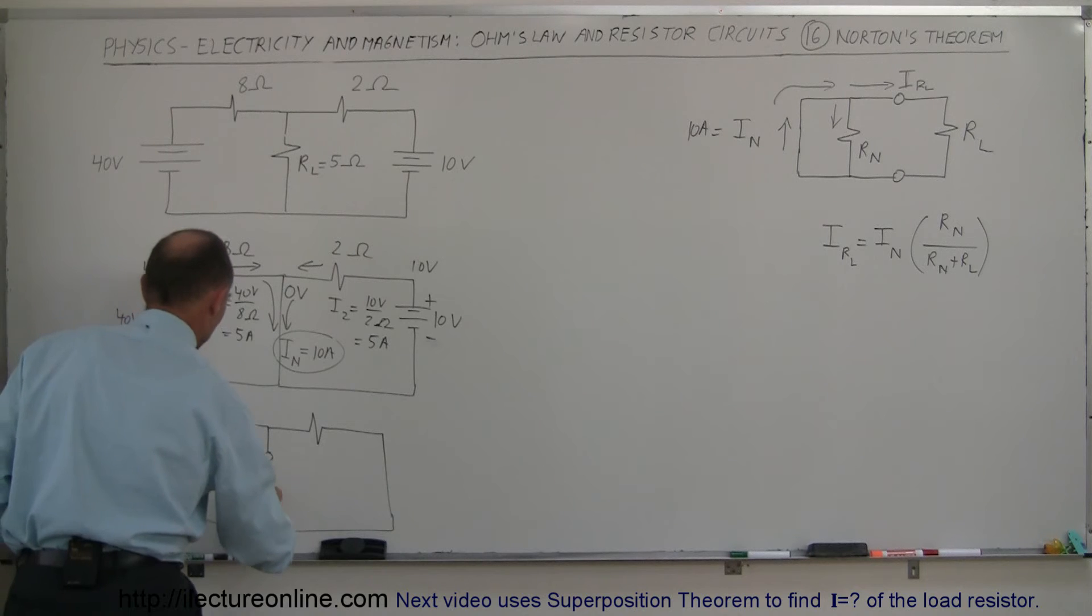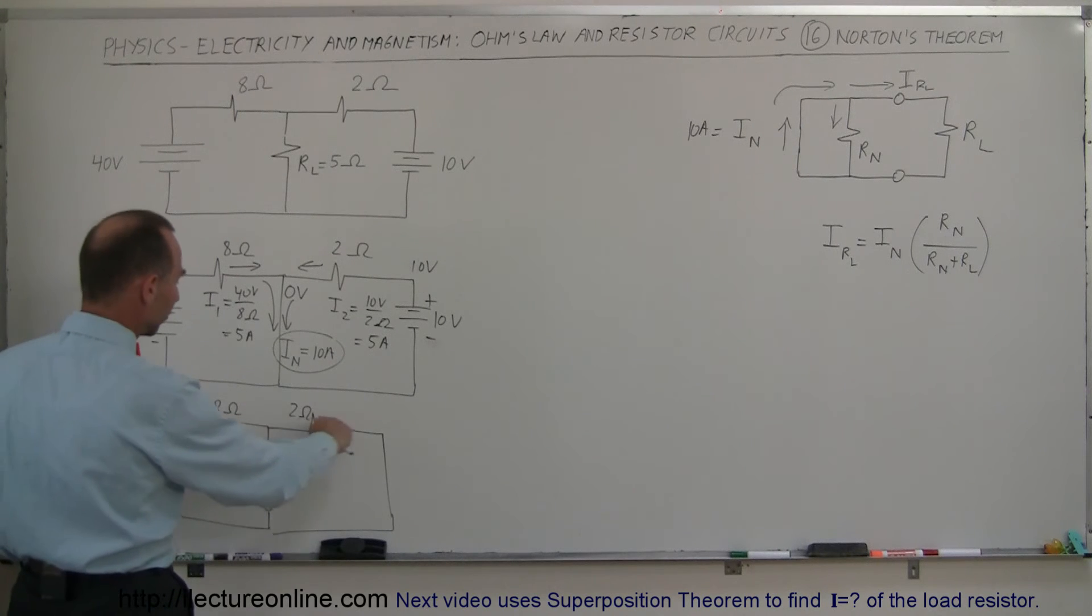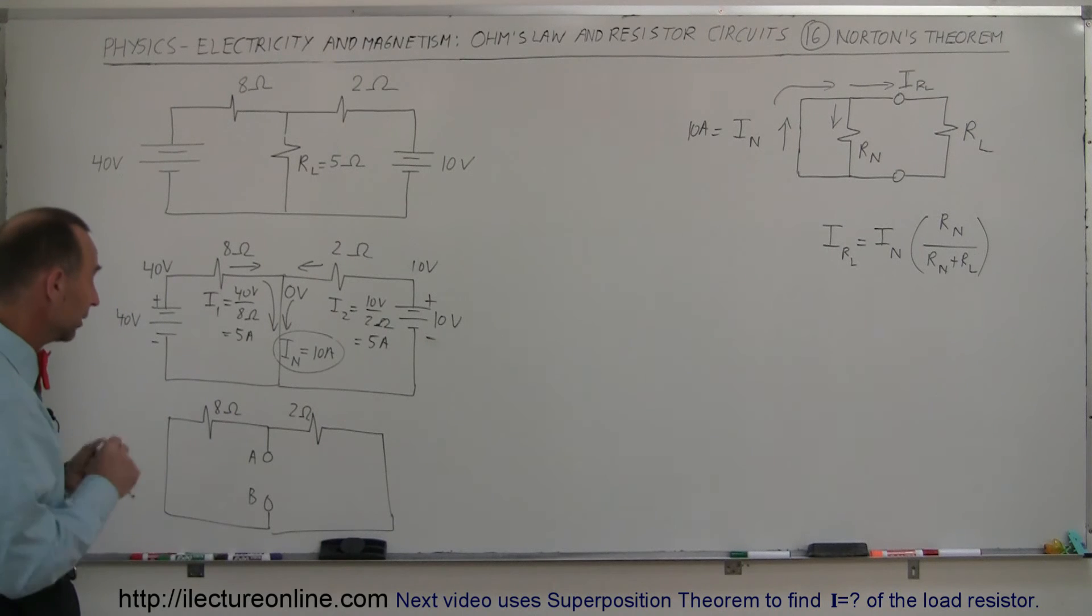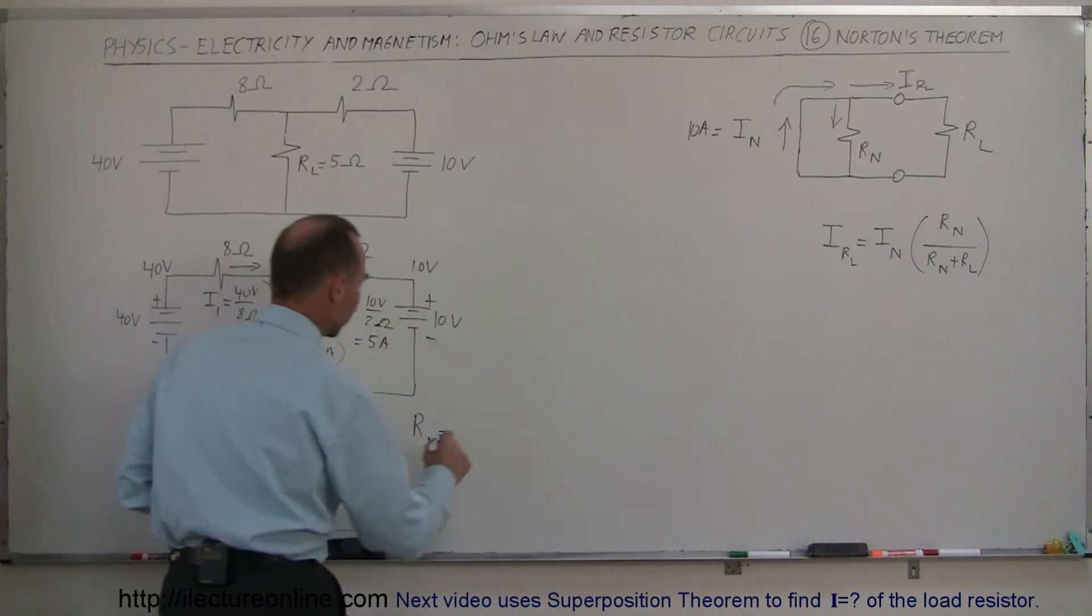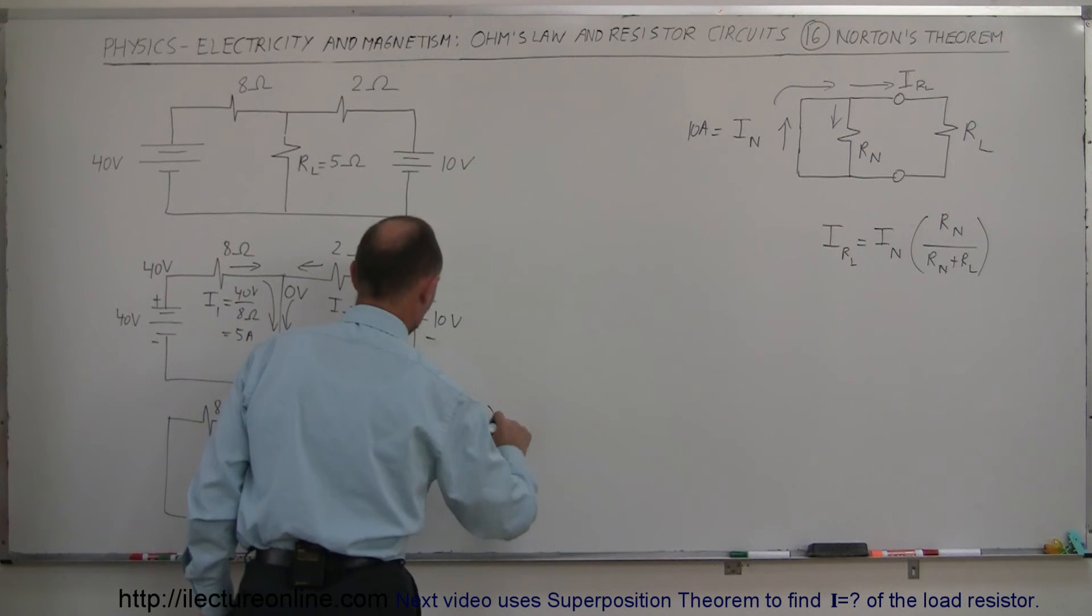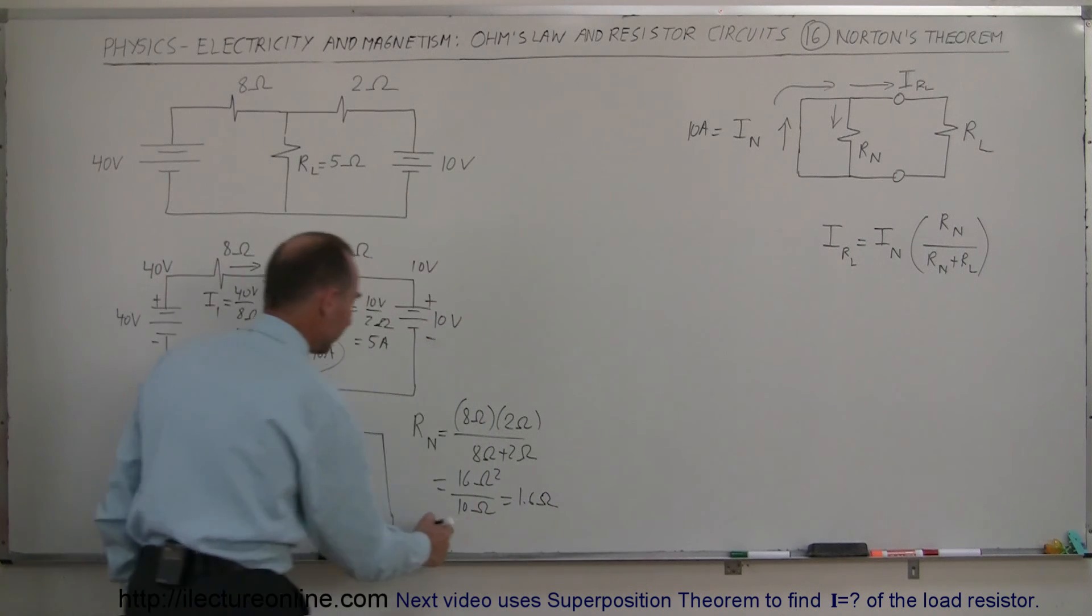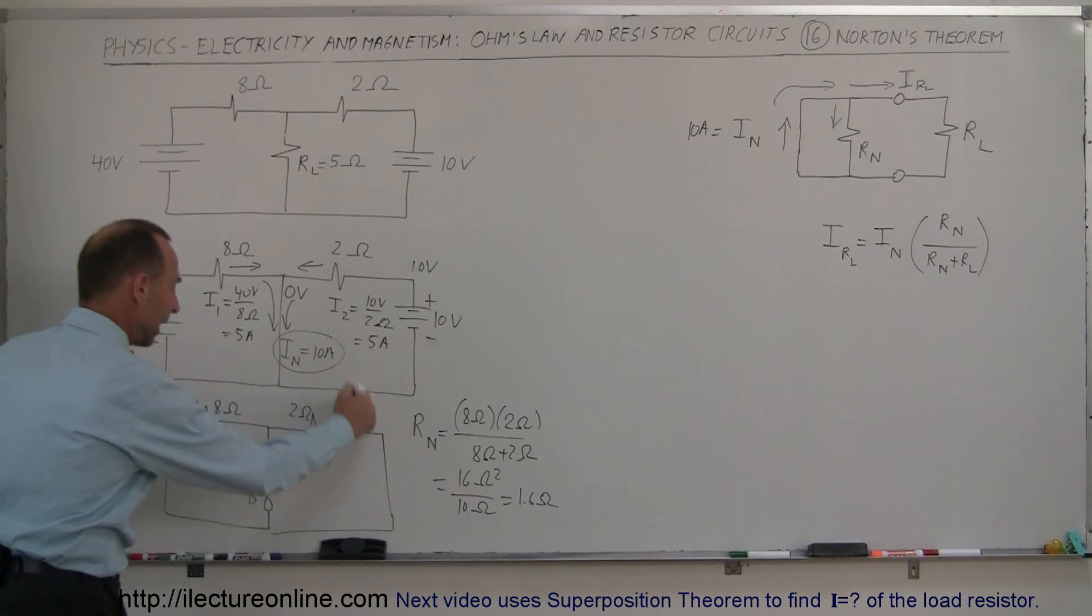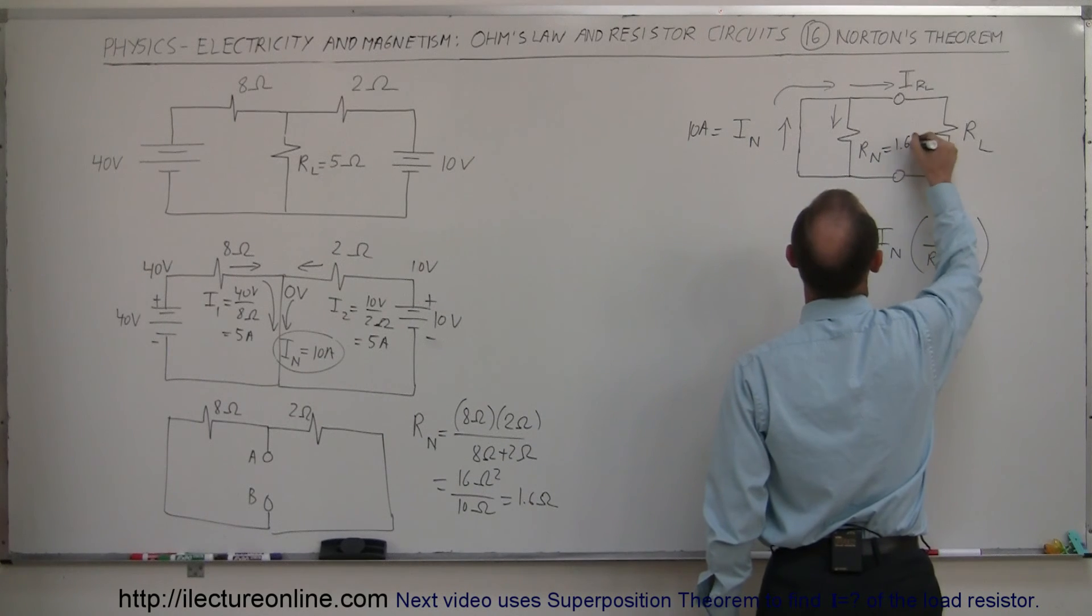This is A. This is B. And so this is 8 ohms. This is 2 ohms. Notice to go from A to B, I have to branch out. I can either go to the 8 ohm resistor, the 2 ohm resistor, come back here to B. So that's a typical parallel circuit. So we can say that R sub N, Norton circuit, is equal to the equivalent resistance here, which is the product over the sum. Remember, with parallel circuits, we do the product over the sum on the resistors. So we have 8 ohms times 2 ohms divided by 8 ohms plus 2 ohms. So it would be 16 ohms squared divided by 10 ohms, which is 1.6 ohms. So the equivalent resistance of this circuit with the load resistor removed and the battery shorted out, we have 1.6 ohms across that gap. So that becomes the Norton resistance here, 1.6 ohms.